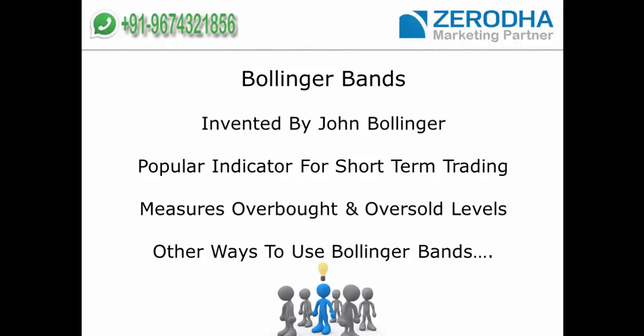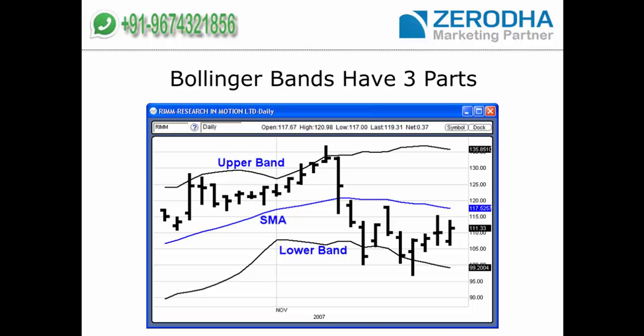The discussion is on Bollinger Bands. Bollinger Bands is an indicator invented by John Bollinger. It is a very popular indicator for short-term trading. It basically measures overbought and oversold levels, but there are other ways to use it as well. Bollinger Bands have three parts: an upper band, a lower band, and a simple moving average in between — which is a 20-period moving average.